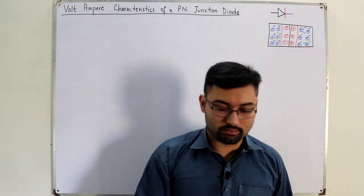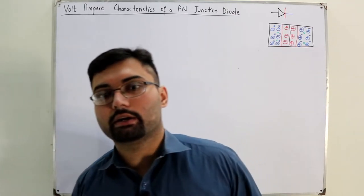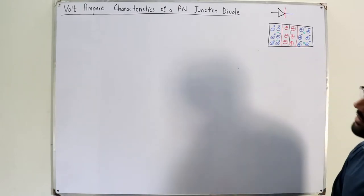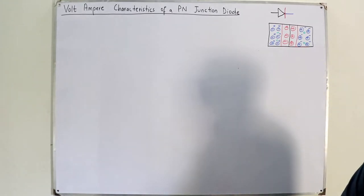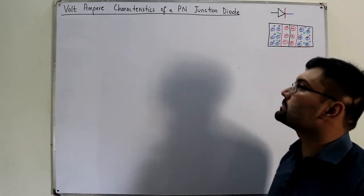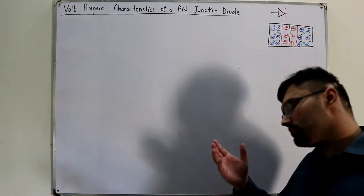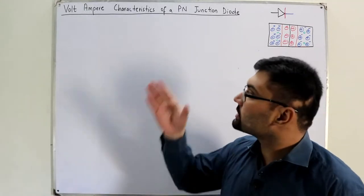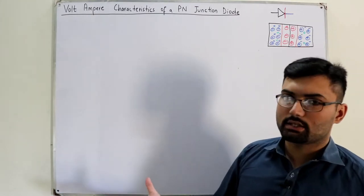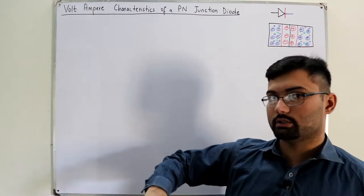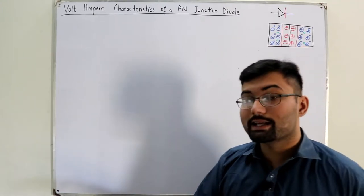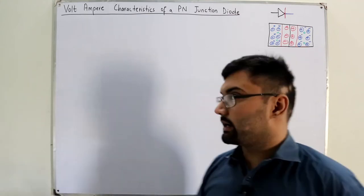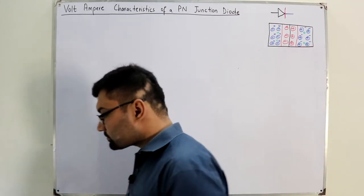Bismillah ar-Rahman ar-Rahim. Assalamu alaikum. Allah Ar-Khan here, and today we study the volt-ampere characteristics of a P-N junction diode. Volt-ampere means the voltage versus current characteristics. On the horizontal axis we have the independent variable, voltage; the dependent variable is current. We'll be drawing a graph of it.